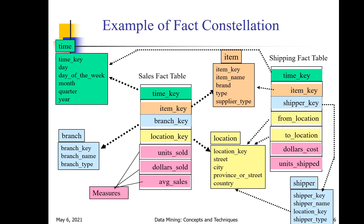This is an example of a fact constellation schema. As shown in the figure, we have two fact tables: a sales fact table and a shipping fact table. For the sales fact table, same as in the previous star schema and snowflake schemas, the dimension tables are time, item, branch, and location. The primary keys of each dimension table act as foreign keys in the sales fact table, and the measures are units sold, dollars sold, and average sales.